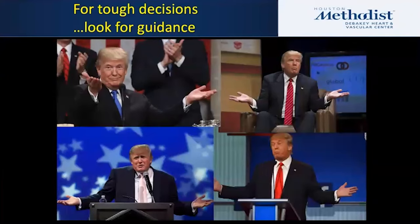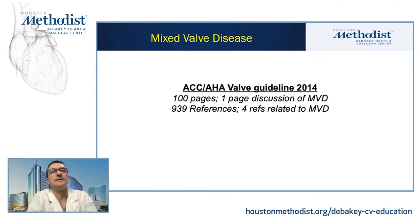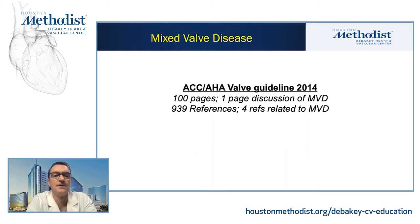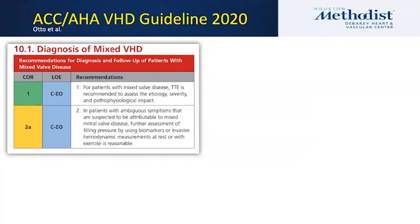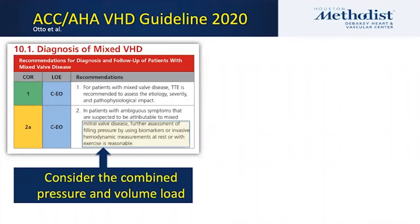This is fairly easy because both elements of this dysfunction look significant. Based on age primarily, he's a prohibitive operative risk. The treatment priority question is: aortic stenosis or mitral regurgitation or both simultaneously? For tough decisions, we look for guidance, and it's really evolving. Looking back at the 2014 ACC/AHA valve guidelines, there was a one-page discussion of mixed valve disease with only four references — a very short conversation in an over 100-page document.